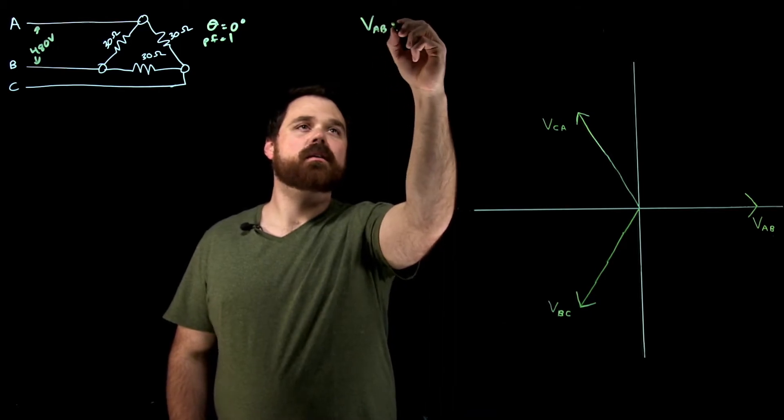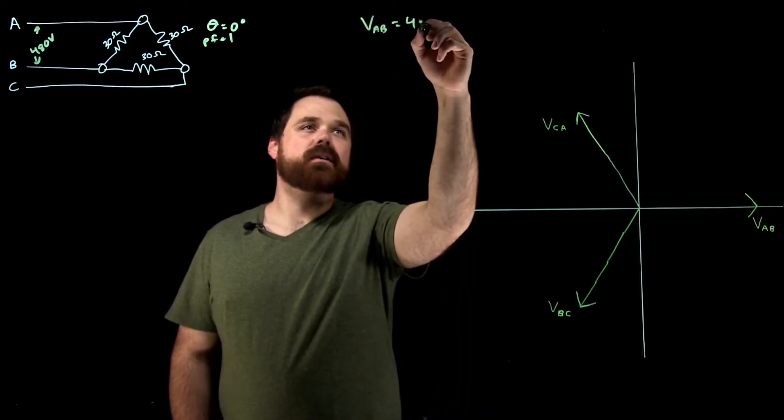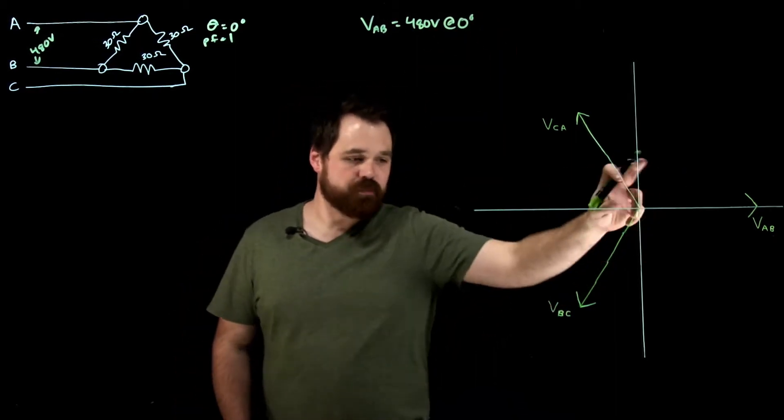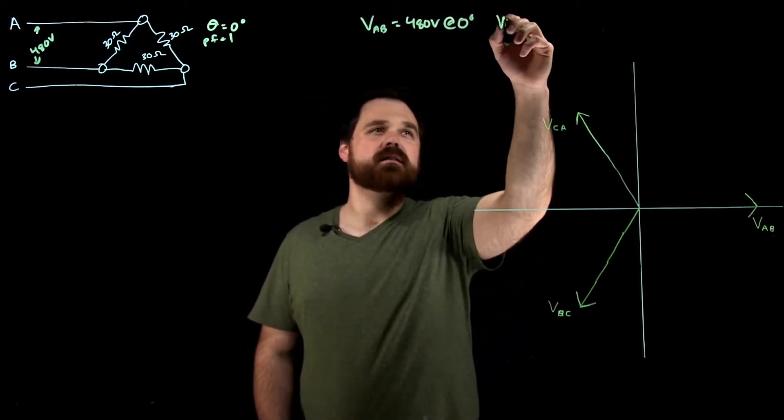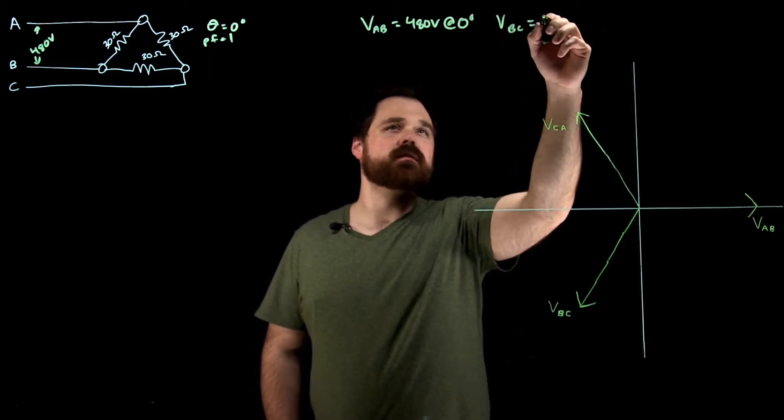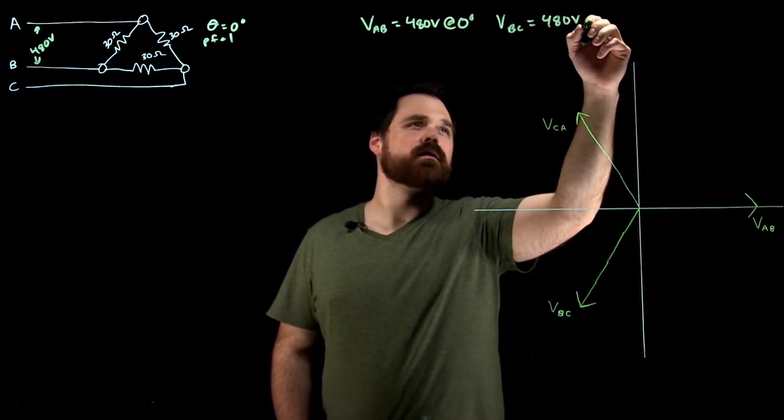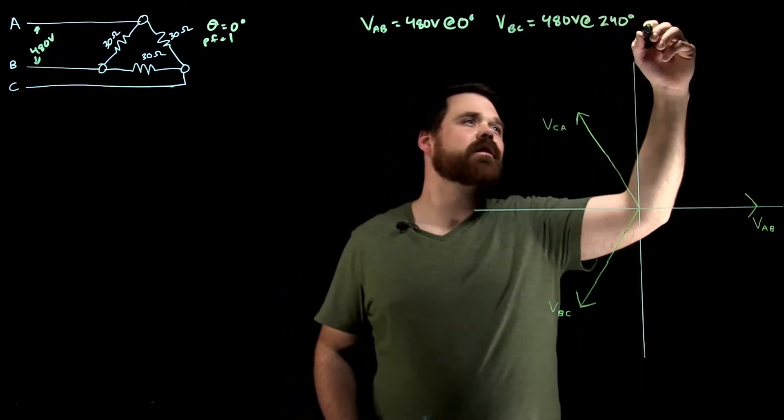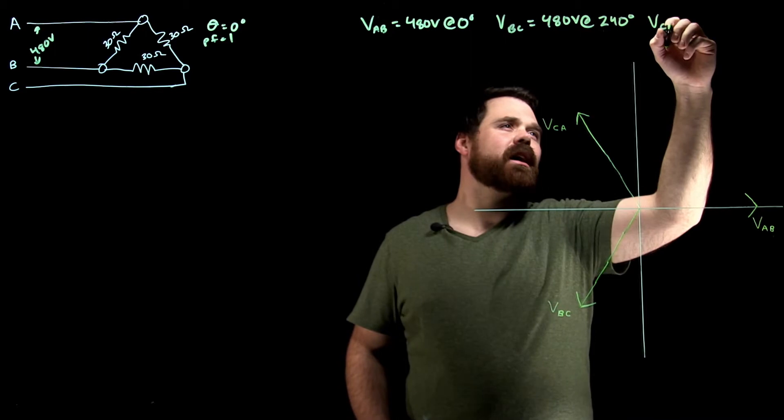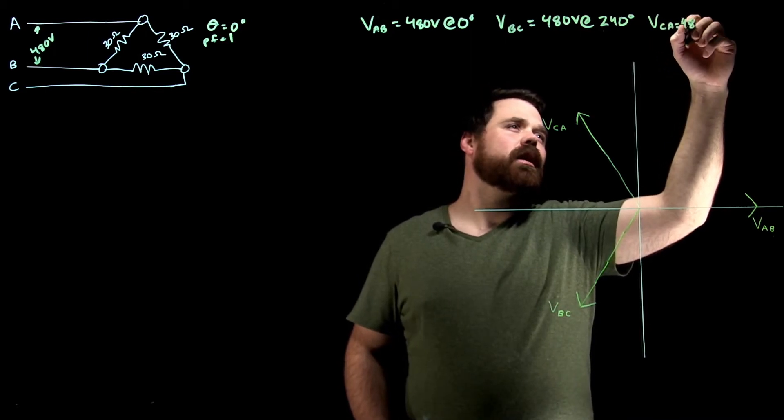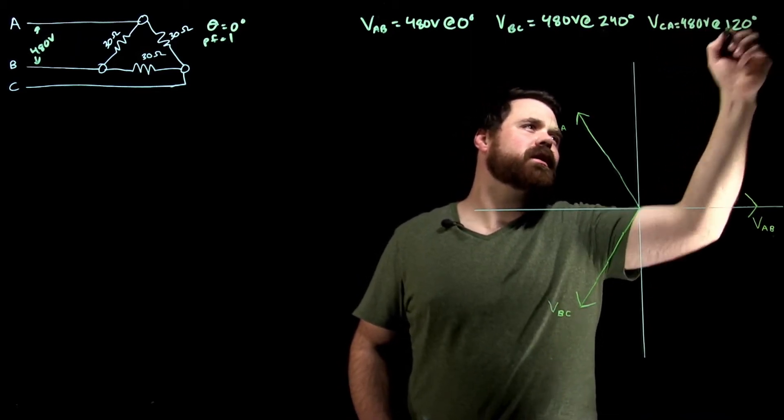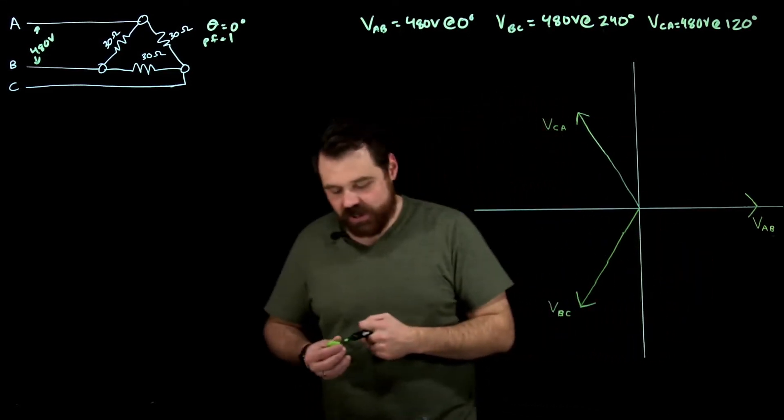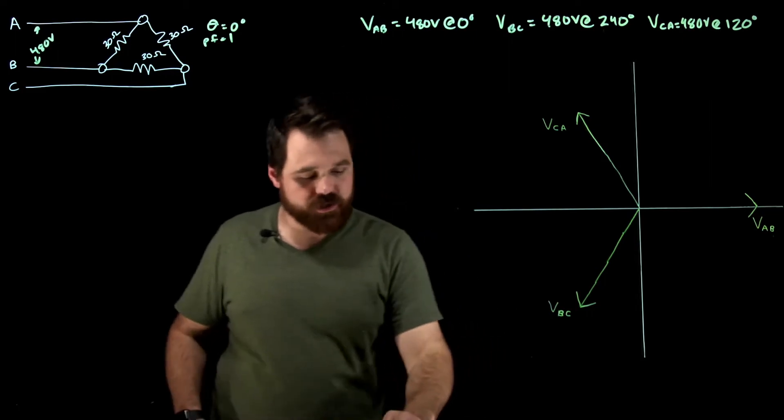V A to B is 480 volts at zero degrees, B to C equals 480 volts at 240 degrees, and VC to A equals 480 volts at 120 degrees. We see that 120 degree shift, so our three voltages are 120 degrees apart from each other.